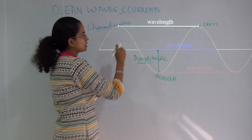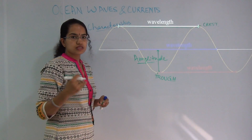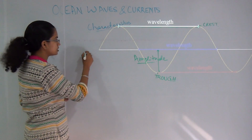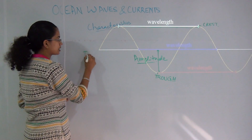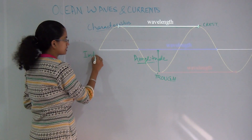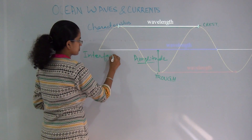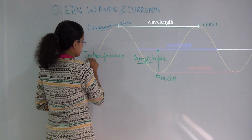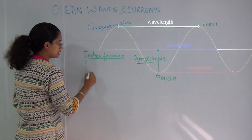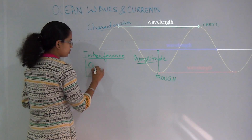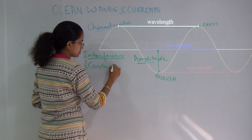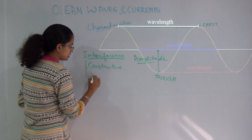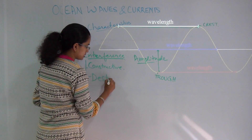The time taken to reach from one point to another would be the time period for the wave. Now, there are some terminologies related to wavelength. The most important is interference, and there can be two types: constructive interference and destructive interference.